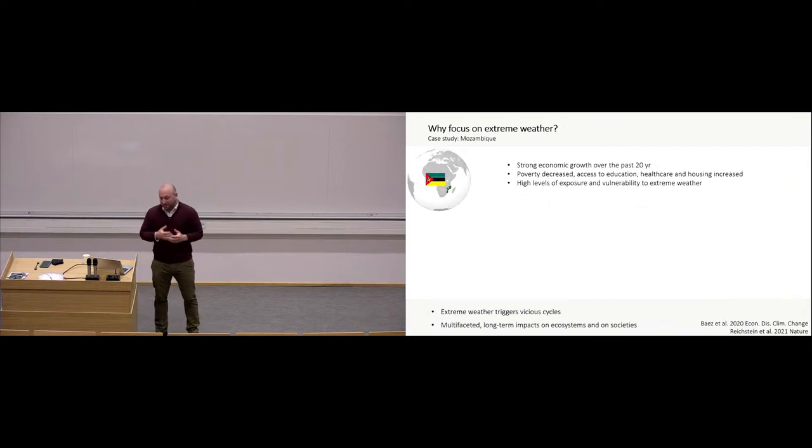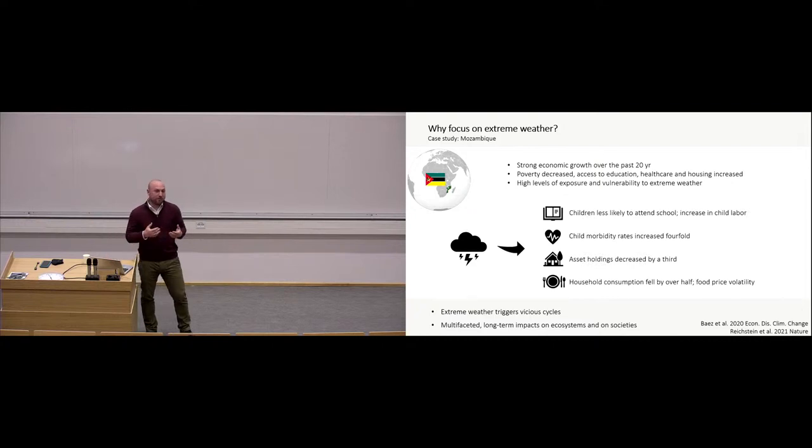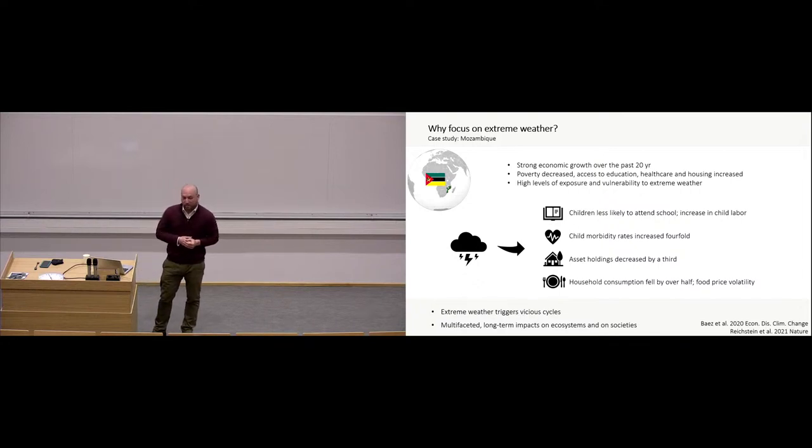So one compelling example, I think, on extreme weather and its multifaceted impacts is the country of Mozambique in Southeast Africa, which has had strong economic growth over the past 20 years. It's seen decreases in poverty and increases in education and healthcare. However, unfortunately, the country has high levels of exposure and vulnerability to extreme weather. And following several extreme weather events, we've seen that this triggers vicious cycles. So children are less likely to attend school because they need to be sent to work. Child illnesses increased. Asset holdings decreased. And household consumption fell because of crop failures and food price volatility. So we can see that extreme weather events have really multifaceted long-term impacts on communities.